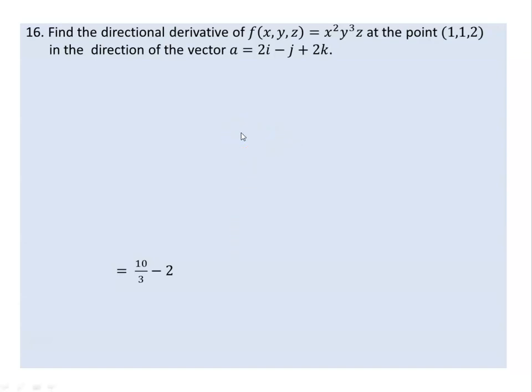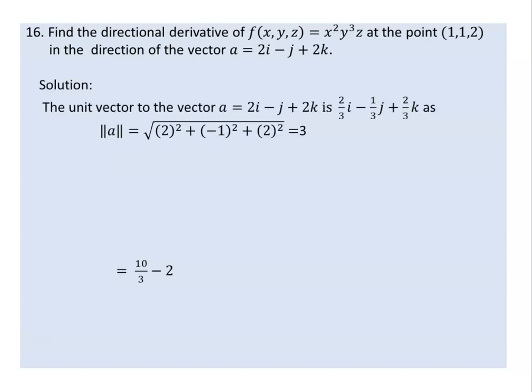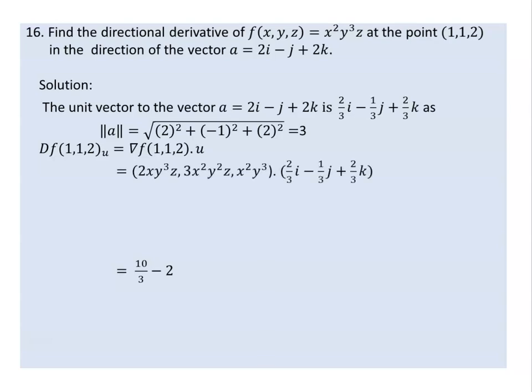Now let's look at the directional derivative at the point (1,1,2) in the direction of the vector (2,-1,2). The magnitude is the square root of 2 squared minus 1 squared plus 2 squared, which equals 3. So the unit vector is (2/3)i minus (1/3)j plus (2/3)k. The directional derivative uses the gradient: the partial derivative of f with respect to x is 2xy³z, with respect to y is 3x²y²z, and with respect to z is x²y³.